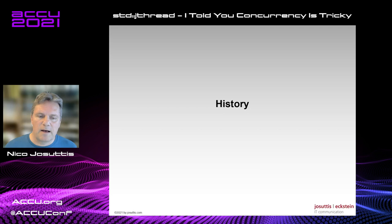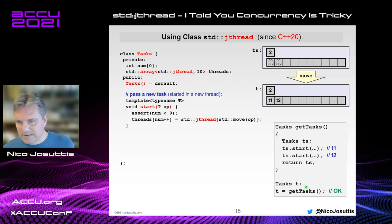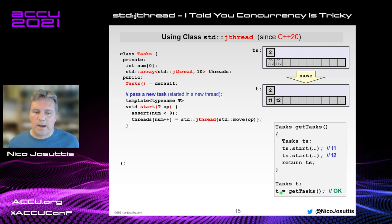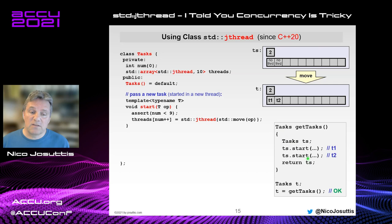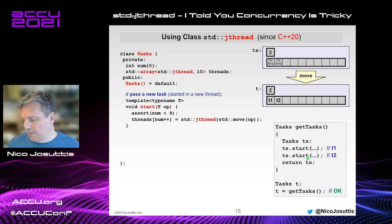Doesn't RVO help here? It depends. RVO might help in some cases, but I intentionally used move assignment here, not initialization, and move assignment is not optimized away. Even with initialization, we have a named return value, so it's NRVO — named return value optimization — which is not required to be performed. C++17 only mandated RVO for prvalue returns, not named returns. So RVO doesn't help here.